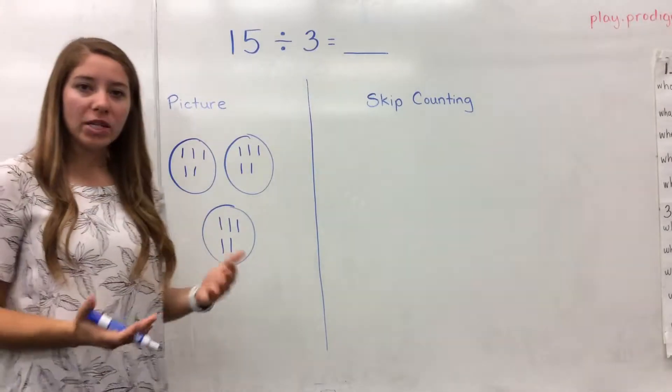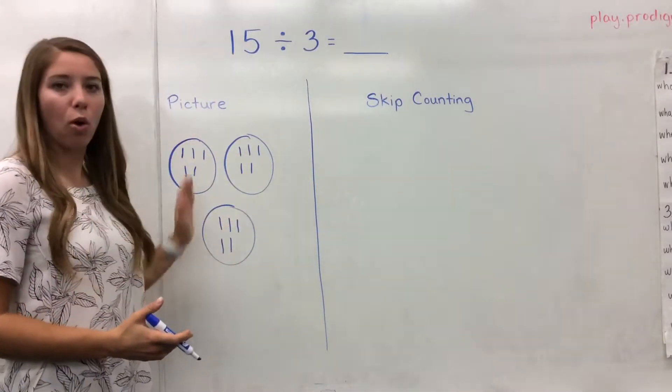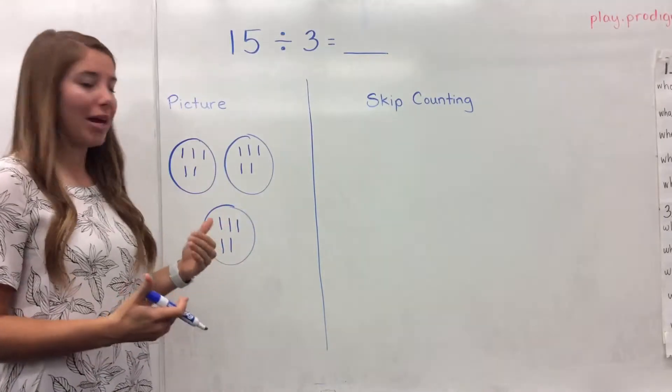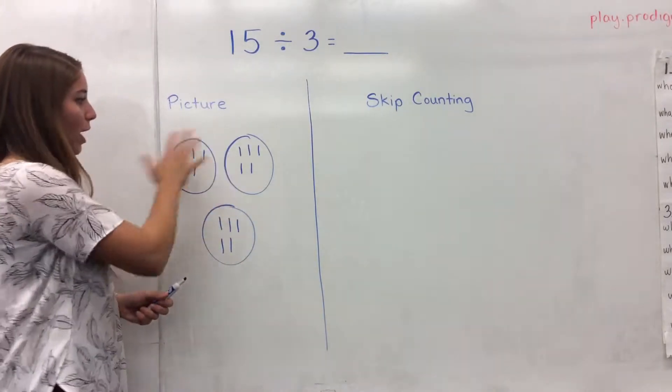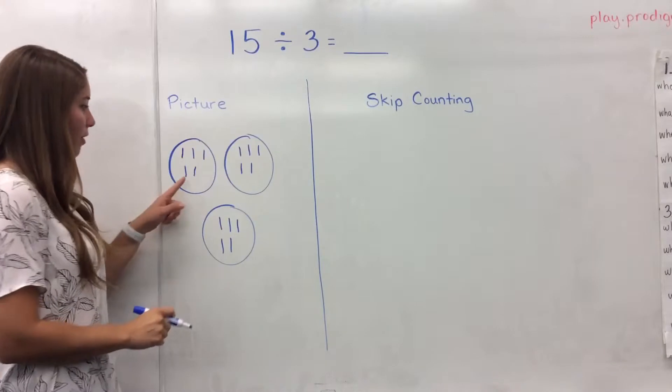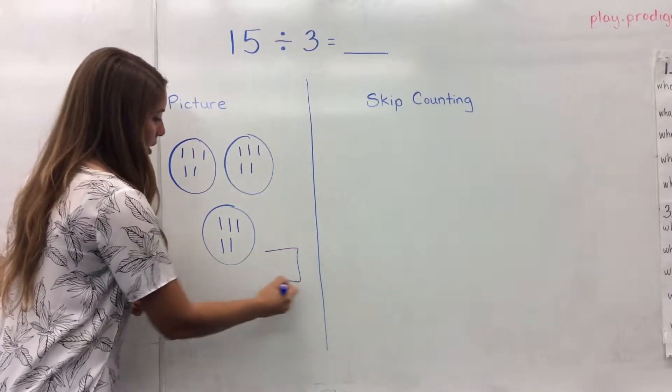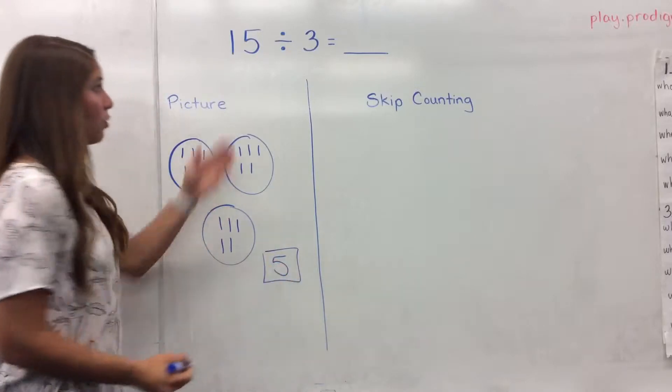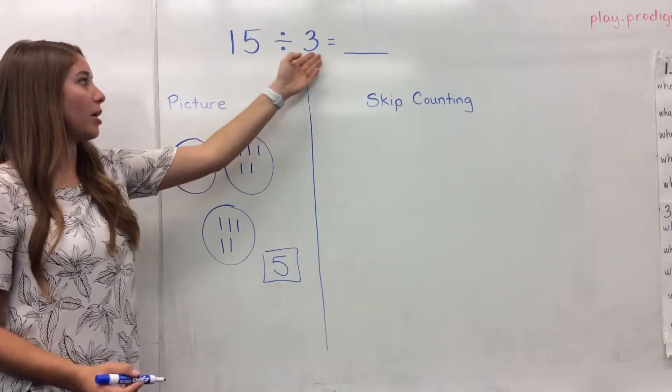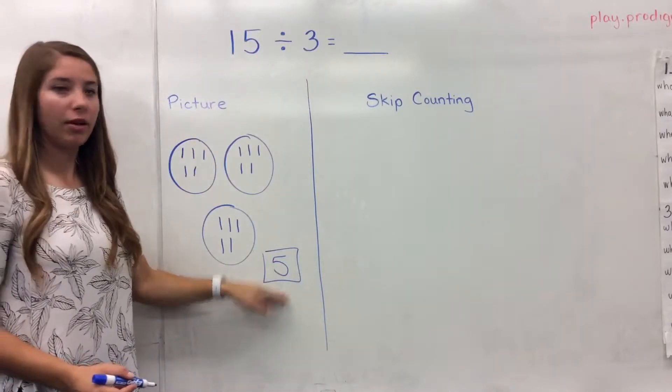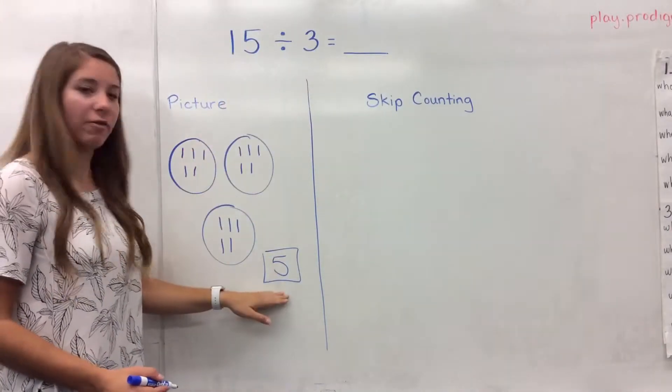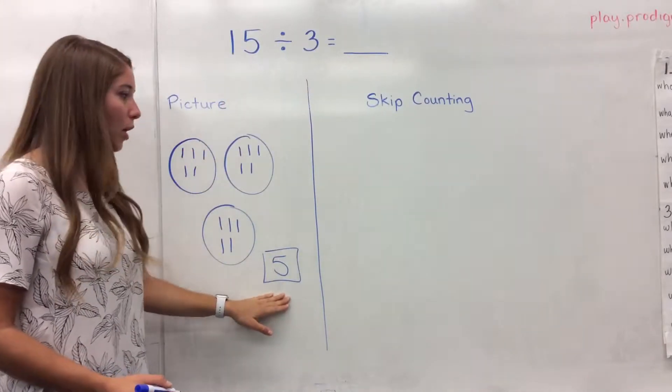And the reason we pass them out that way is because that way we ensure that the whole time, every group maintains an equal amount. So now that we've passed out our 15 objects, we can figure out that inside each group, there are going to be five objects, and that will be the answer to our division equation. 15 divided by 3 equals 5. 15 objects broken into three equal groups means there will be five in each one.